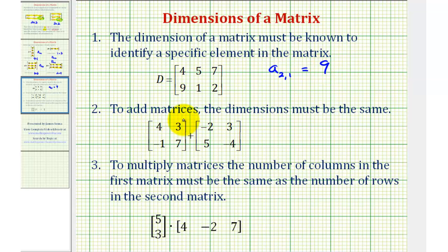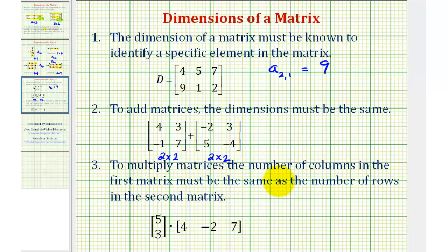Another reason is to add or subtract matrices, the dimensions must be the same. Notice how this first matrix is a two by two matrix, and the second matrix is also a two by two matrix. So because these dimensions are the same, we would be able to add these matrices. If the dimensions aren't the same, we cannot add or subtract the matrices. And then finally, to multiply matrices, the number of columns in the first matrix must be the same as the number of rows in the second matrix in order to perform matrix multiplication.